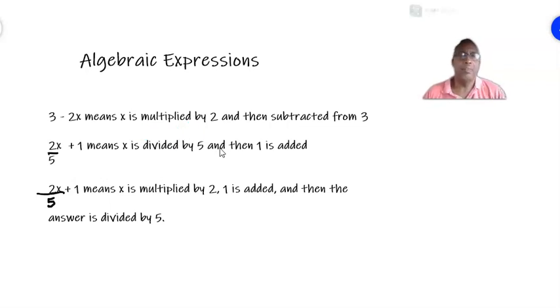More examples. In this first one, you have 3 minus 2X. Again, remember, from the BODMAS rule, we multiply before we subtract. So, in this example, X is multiplied by 2, and the answer is subtracted from 3. You can also say it this way: 3 subtract the product of X and 2. The product of X and 2 means you are multiplying 2 times X.